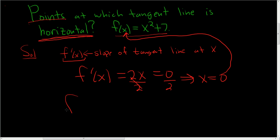f of zero is zero plus seven, so we get seven. This function has a horizontal tangent line at zero comma seven.